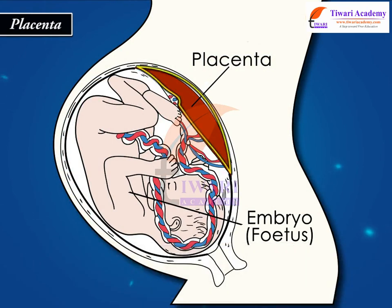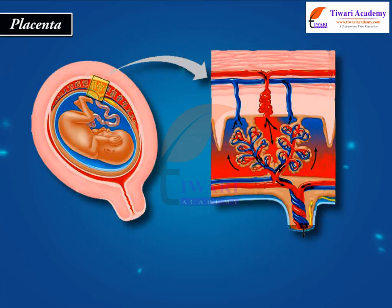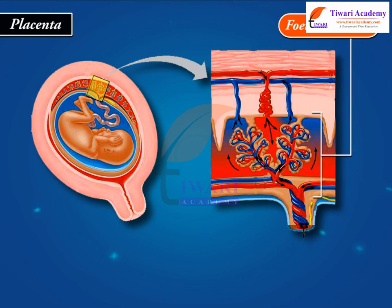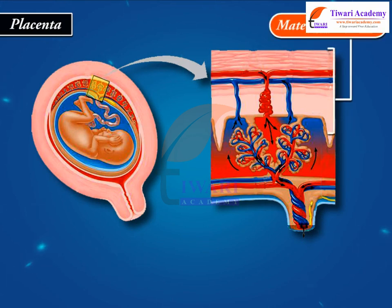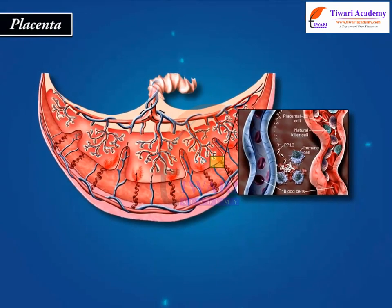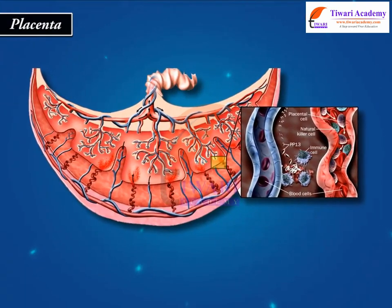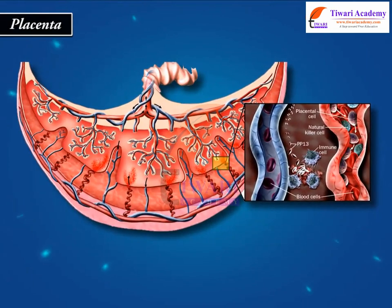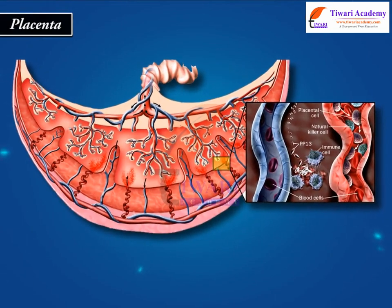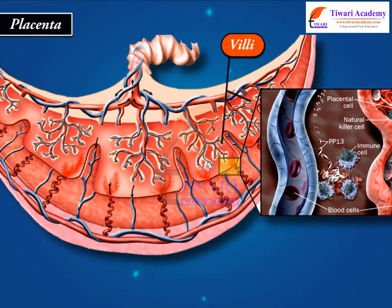The placenta has two parts from the point of view of its origin. These are the fetal placenta, formed by the extra-embryonic membranes of the embryo, and the maternal placenta, provided by the endometrium of the uterus. Placenta can be classified into various categories based on origin, morphological structure, distribution of villi, and histological structure.